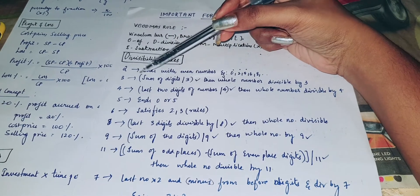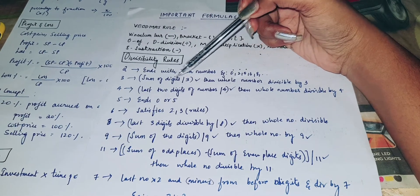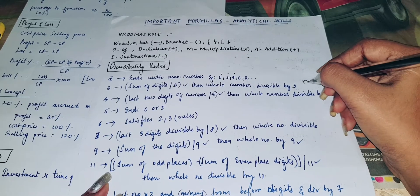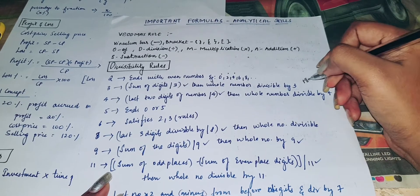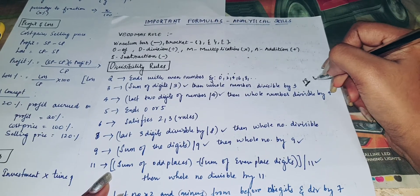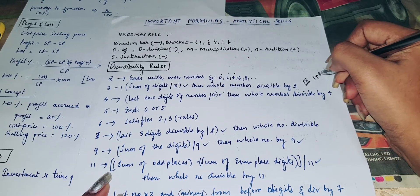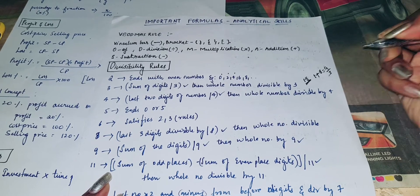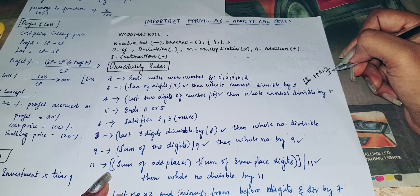Next, divisibility rule of 3: the sum of the digits must be divisible by 3. For example, we have 18. The sum of the digits is 1 plus 8, which is nothing but 9. 9 divided by 3 — so 18 is divisible by 3.